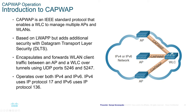For this class, you should know that CAPWAP is based on LWAPP and uses additional Datagram Transport Layer Security (DTLS). You should know CAPWAP is an IEEE standard and that ports 5246 and 5247 are used for communication between AP and WLC over CAPWAP tunnels. IPv4 uses IP protocol 17 and IPv6 uses IP protocol 136.